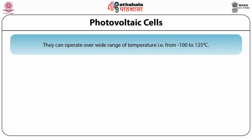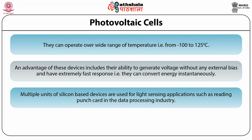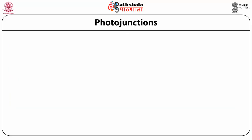Photovoltaic cells can operate over a wide temperature range, from minus 100 to 125 degrees Celsius. Advantages include their ability to generate voltage without any external bias and extremely fast response — they can convert energy instantaneously. Multiple units of silicon-based devices are used for light sensing applications, such as reading punch cards in the data processing industry.